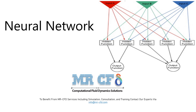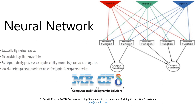Hidden functions are the same as threshold functions that are connected or disconnected to the desired output function based on a set of input parameters. Each time the process is repeated, these weight functions are set to minimize the error between response surfaces or output functions with design points or inputs. This algorithm consists of input parameters, hidden functions, and output functions.